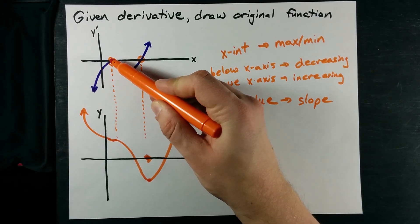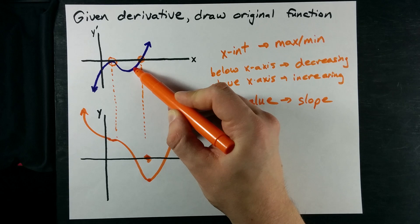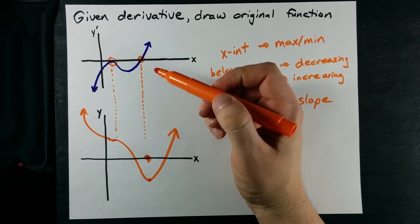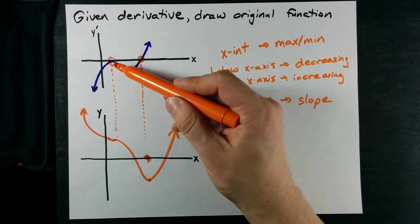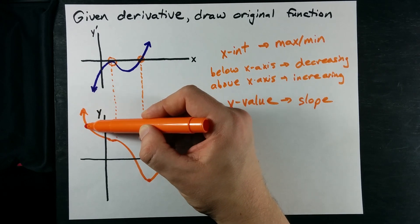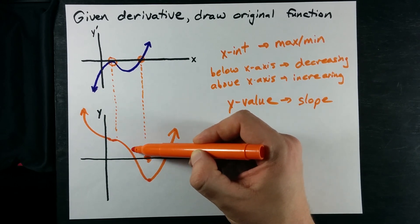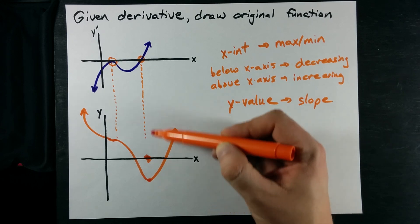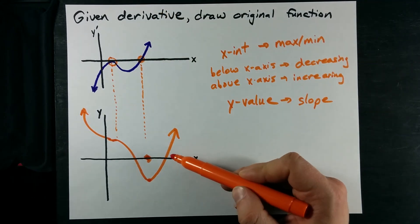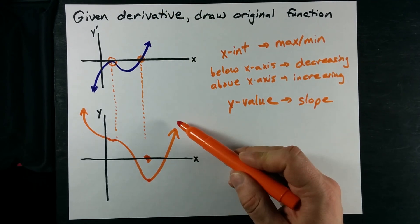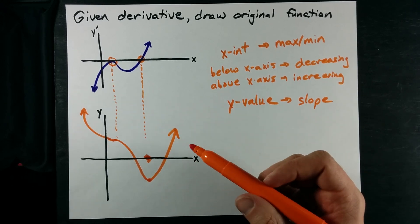Let's see what I did. Decreasing throughout the negative region, flat at the point of inflection, continuing to decrease, then flat at the minimum, then increasing. Story checks out.